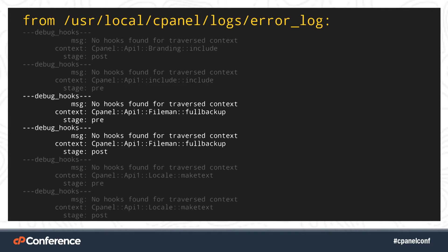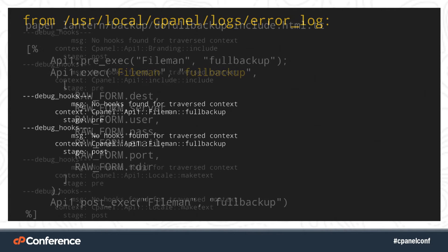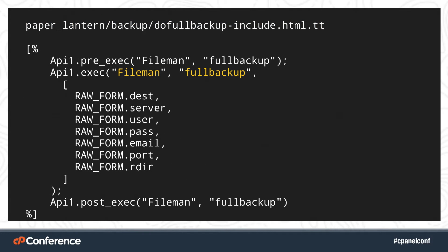With hook debugging turned on, tail the cPanel error log while you perform the action you want to hook. In this case, go into the cPanel interface as a user and initiate a backup process. Look through the error log output until you see the API call you want to block. In almost all cases, there will be a pre and a post hook — one that runs before the API call, one that runs after. Only the pre hook can prevent an API call from running. The context line tells you the category and event, which are the bits you'll need later. This is the piece of template toolkit code in PaperLantern that runs when a user clicks the button to make a full backup. The API module is FileMan and the function is FullBackup. It's still using the deprecated API 1, which creates a problem for us later.